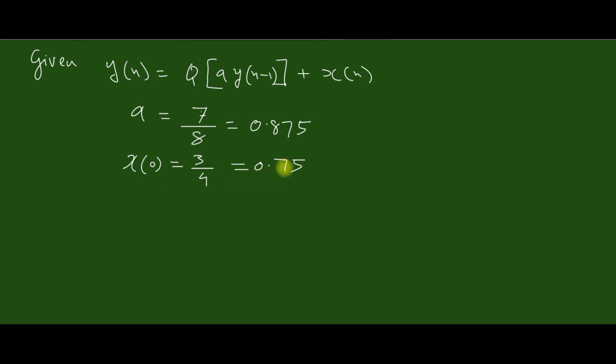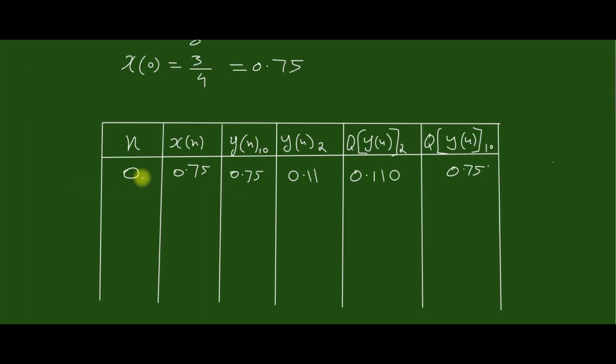Next, we can draw the table. The table can be drawn in this pattern: first column n, second column x(n), third column y(n) decimal, fourth column y(n) binary, then the quantized y(n) in decimal.